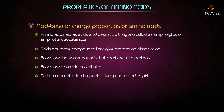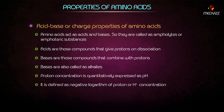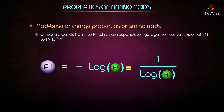Proton concentration is quantitatively expressed as pH, or parts hydrogen. It is defined as the negative logarithm of proton or hydrogen ion concentration. The pH scale extends from 1 to 14, corresponding to hydrogen ion concentrations from 1 mole to 1×10⁻¹⁴ moles.